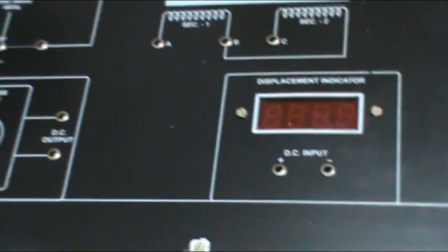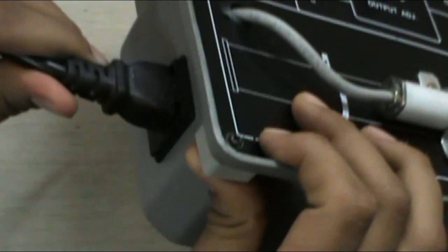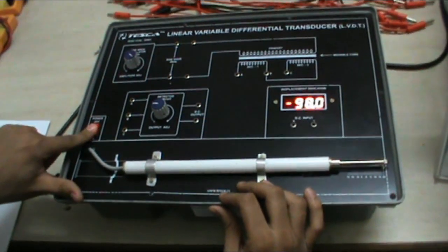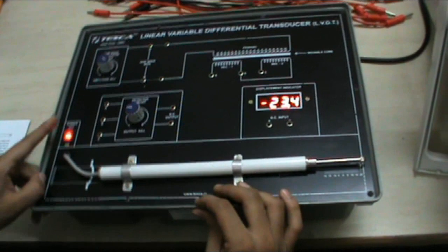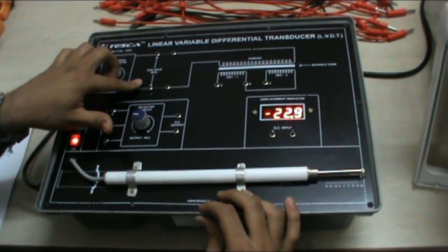First of all, connect this equipment with the mains as you can see here. Connect this equipment to the main AC supply. Switch it on. After switching on the main, connect a CRO.